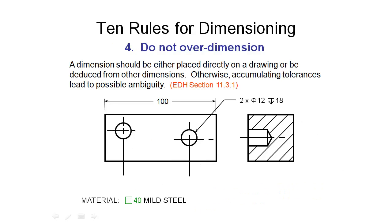So rule number four is not to over dimension. If you can figure out what a dimension is based on other dimensions and relationships provided in the drawing, then you shouldn't provide an extra dimension. In this case we've taken a similar example but this time we've moved the hole a little bit off both of these horizontal and vertical alignments. It's no longer a symmetrical part.